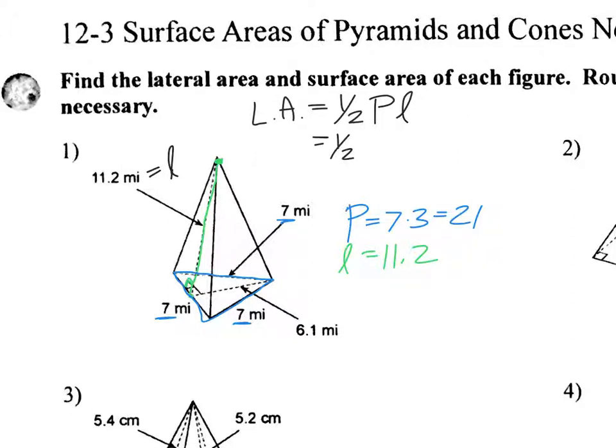So 1/2 perimeter, 21, slant height, 11.2. So we're going to type that in on the calculator because it says round here. So I'll do that. So 0.5 times 21 times 11.2 gives me 117.6. So my slant or lateral area is 117.6. Now remember lateral area is the area going around the shape.